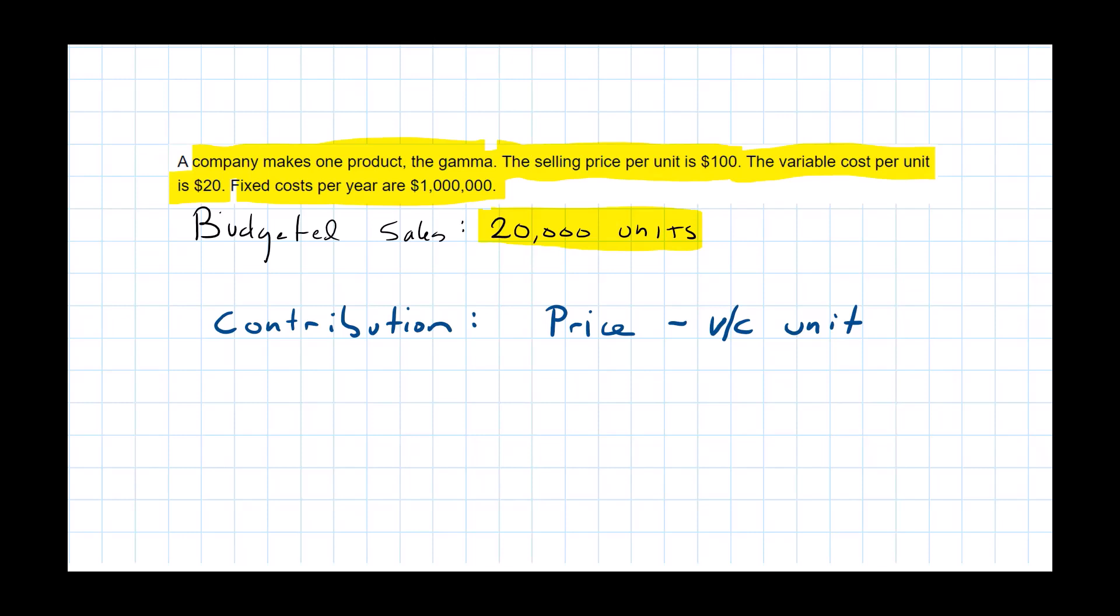So we sell our unit, we pay the variable cost, what's left over contributes to the fixed costs. Once we've paid our fixed costs, what's left over then contributes to profit. So that's the idea of contribution per unit.